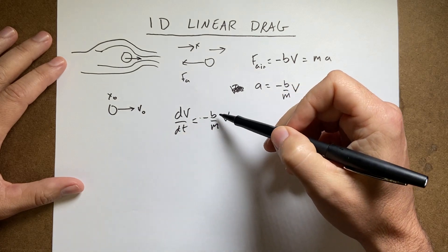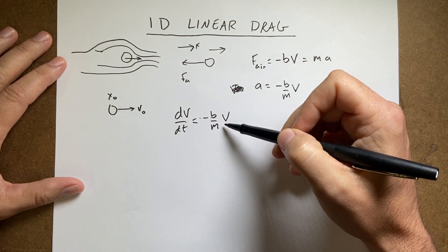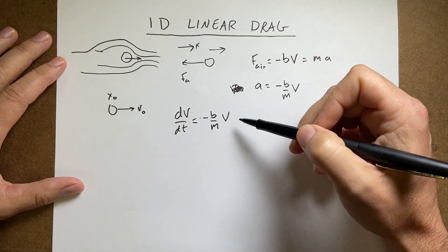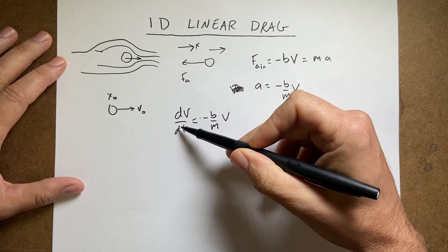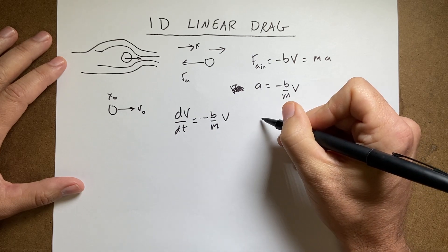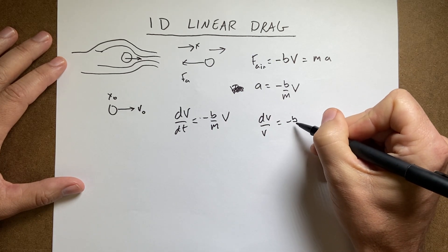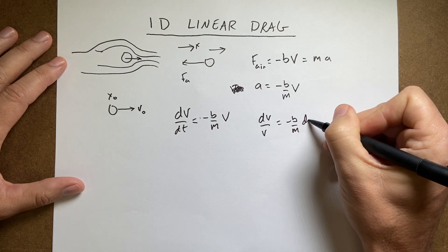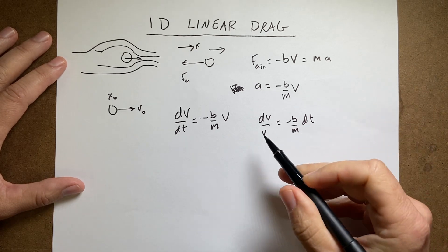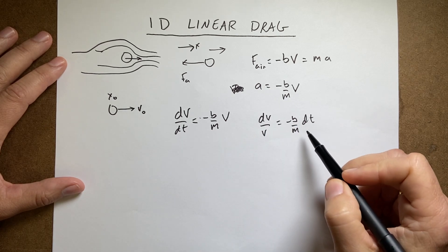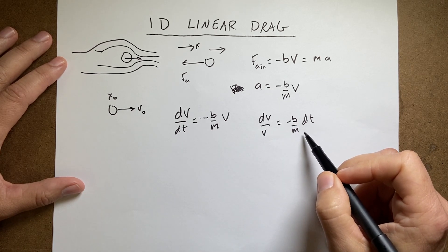So let's divide this side by V and multiply both sides by V and multiply both sides by dt, so I get this. dV over V equals negative B over M dt. So now I have on this side it just depends on V, and this side just depends on T. And I can integrate both sides.